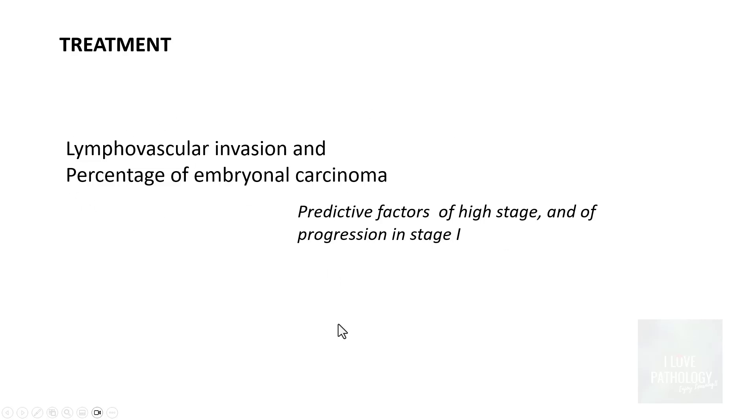Once you diagnose embryonal carcinoma the treatment is usually orchidectomy along with adjuvant chemotherapy. So that completes a very short topic on a particular important testicular tumor, that's embryonal carcinoma, which we saw is the second most common germ cell tumor after seminoma.